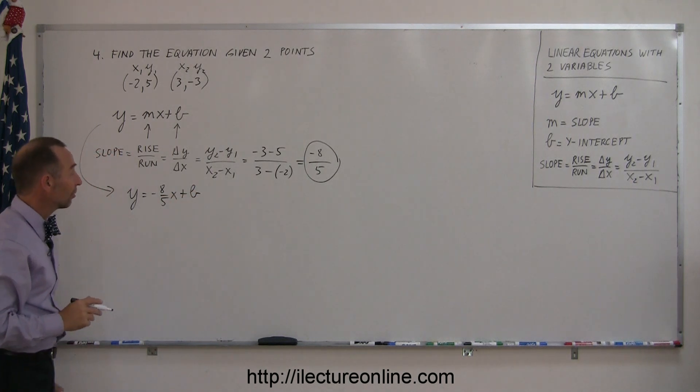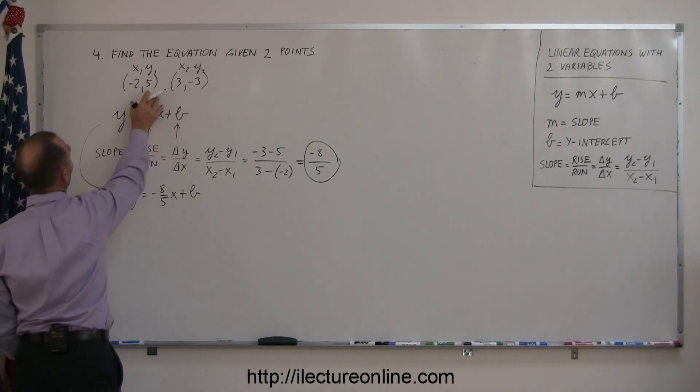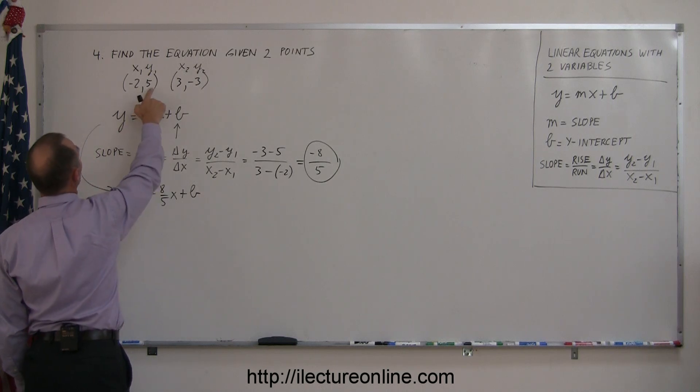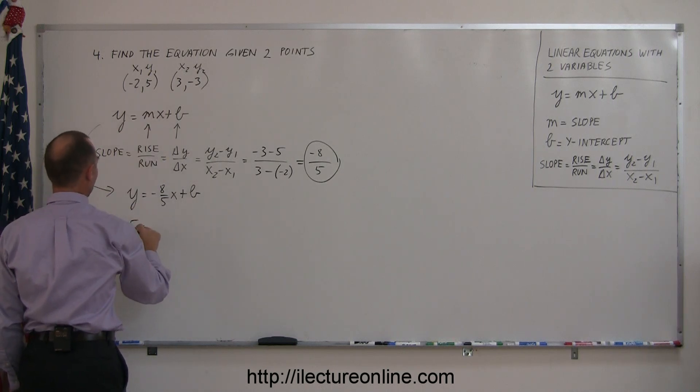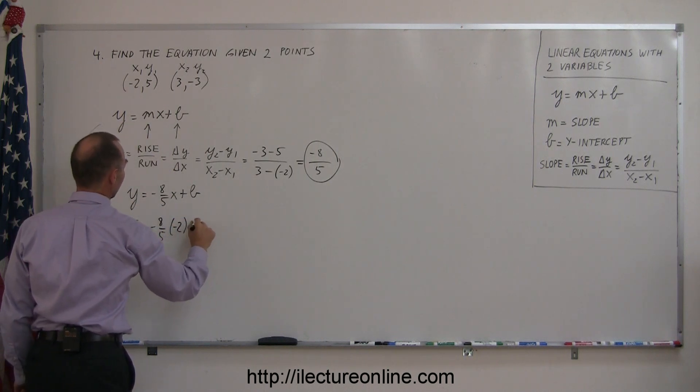The next thing to do is find the intercept. The key is to take one of the two points, let's say (-2, 5), and plug into y and x. So y is 5, and x is -2: 5 = -8/5(-2) + b.